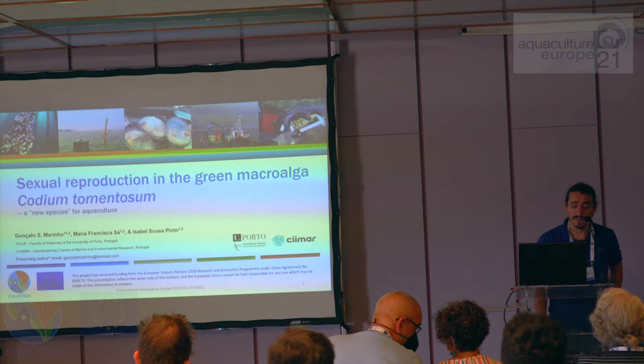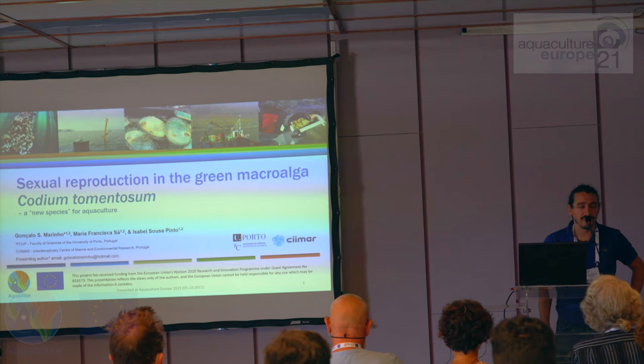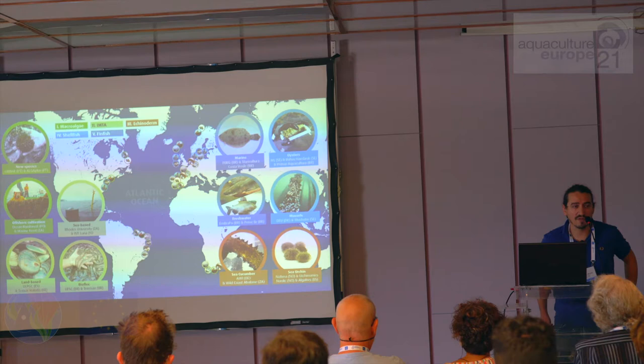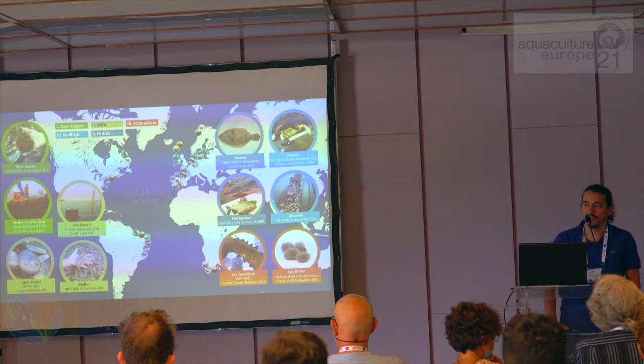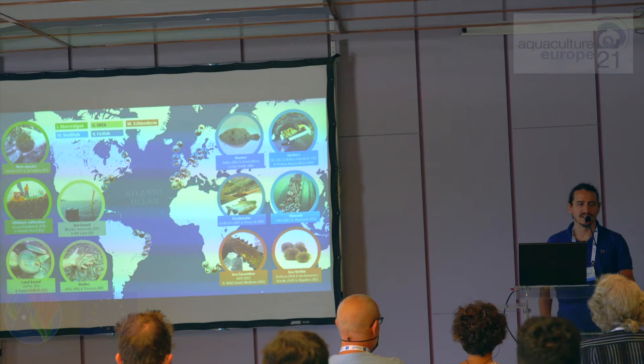The results I'm presenting here are from the Horizon 2020 project called Aquavitae. As Phil before me briefly presented, the overall goal of this project is to increase biomass production of low trophic species across the Atlantic, because we think low trophic species will have a major role to play in increasing food production from the ocean.